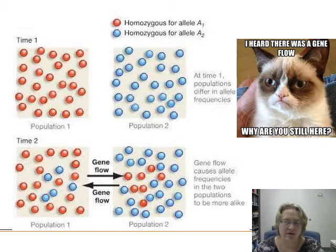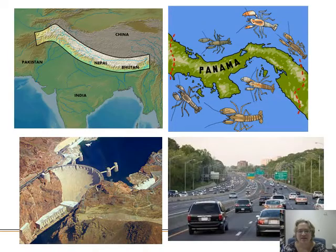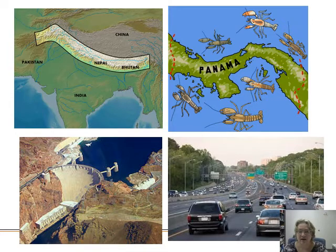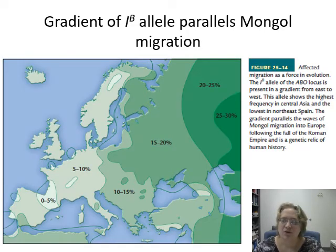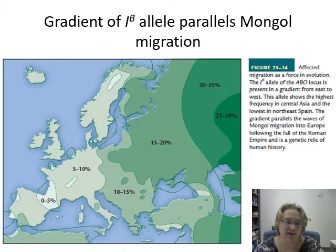Over time, two diverged populations allowed to reconnect will resume gene flow. Major barriers include the Himalayas — there are significant species differences north and south of them — and the Isthmus of Panama, which separated Atlantic and Pacific oceans before a canal was built. Human-made barriers like dams and major highways also impede animal movement. For example, the blood type B allele gradient closely parallels the Mongol migration, showing how far that allele spread through conquered or occupied populations.